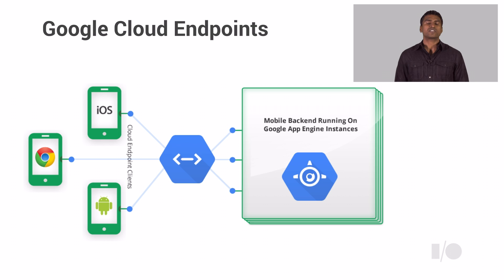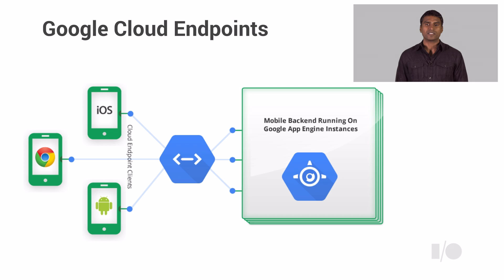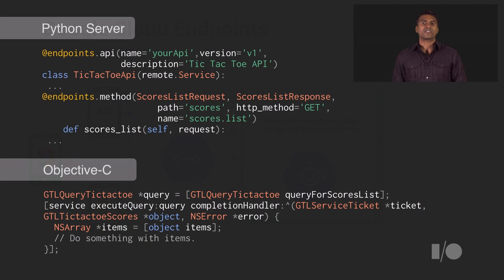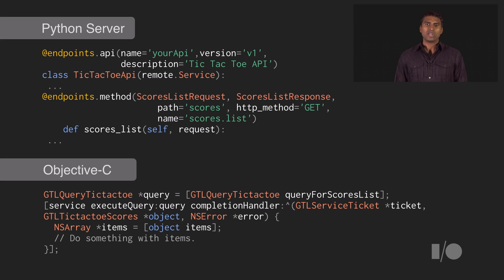Google's got you covered with a great service that we call Google Cloud Endpoints. We can build services on App Engine and expose them as APIs for your iOS apps. And these APIs are also accessible from Android and web apps, so you're covered on all fronts. Here you can see server logic in Python, really straightforward, with the client-side API call below it.